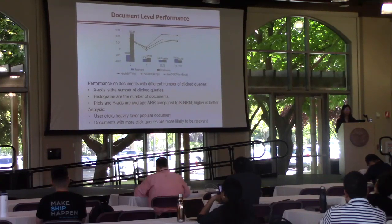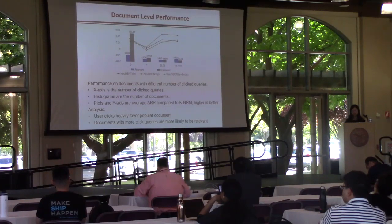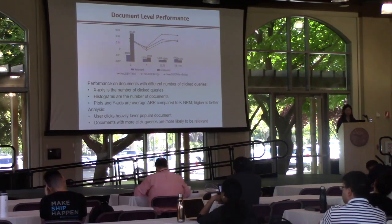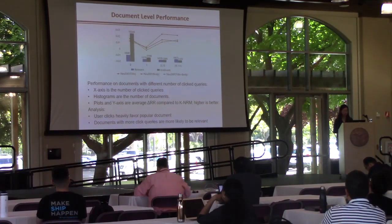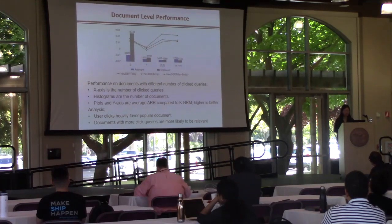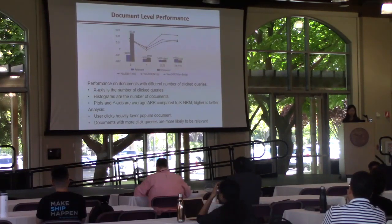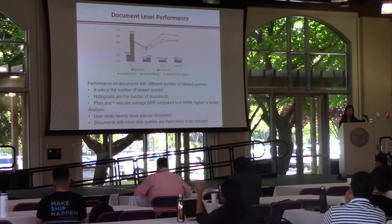We also evaluate our model at the document level. This shows performance on documents with varying numbers of clicked queries. The x-axis is the number of clicked queries, the histograms show the number of documents, and the y-axis shows the average DeltaRR compared to our base ranker KNRM. We can tell that user clicks heavily benefit popular documents, and documents with more clicked queries are more likely to be improved by UDAF. Interestingly, even documents with no clicked queries show that expansion terms still help UDAF learn better parameters than the base ranker.